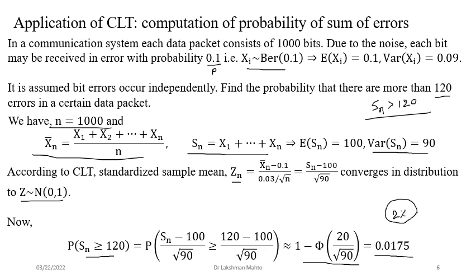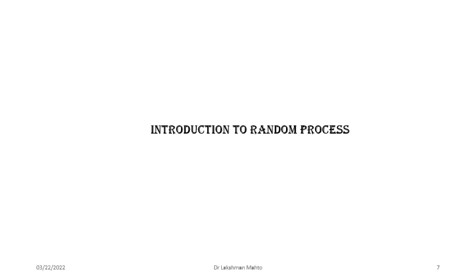In the last example, we saw high probability of concentration near the true mean. This problem showed very low probability for right-tail deviation — epsilon away from the sample mean. These two together illustrate the power of the CLT. Now we move to the next segment: the introduction to random processes. If anyone has a question regarding the application of the central limit theorem, ask now; otherwise, we will go forward.